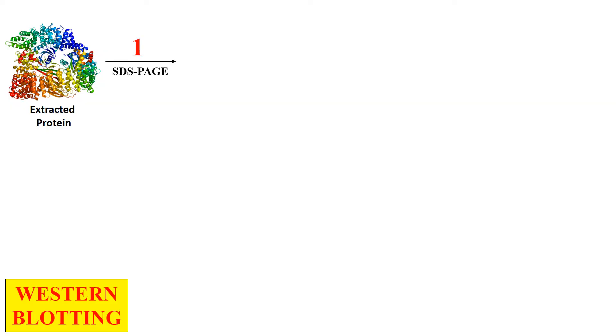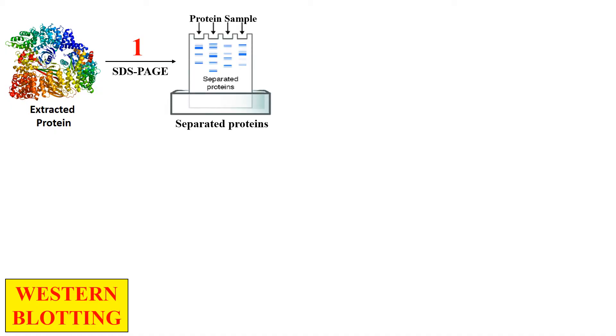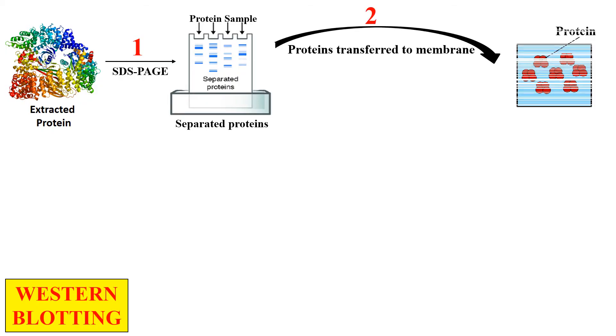Now let's discuss the procedure of Western Blotting. The first step is extraction of protein — we have the extracted protein sample. These proteins are then separated using a technique called SDS Polyacrylamide Gel Electrophoresis, that is SDS-PAGE. With this technique, the proteins are separated according to their molecular weights. In the next step, these separated proteins are transferred to a membrane, which may be either nylon or nitrocellulose.